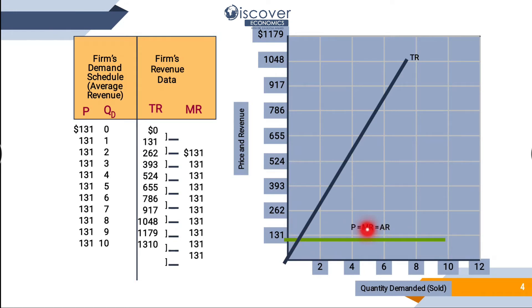The line of price will remain the same. One important thing to remember is that in perfect competition, price is always equal to marginal revenue and average revenue. As you have seen, the price is 131 throughout, marginal revenue is 131 throughout, and if you calculate average revenue, it will also be 131.